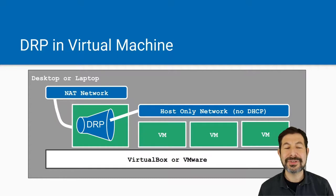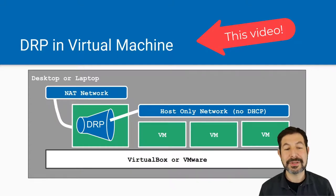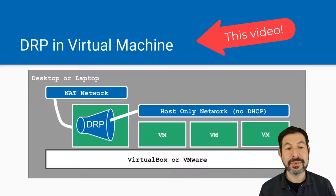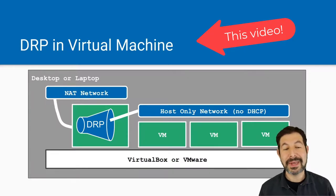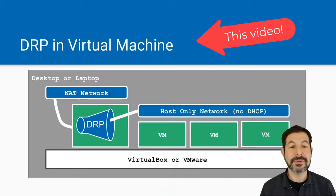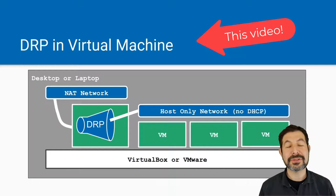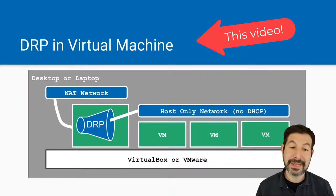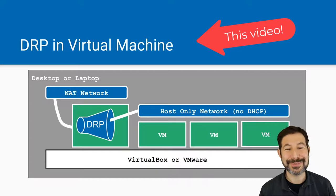The Digital Rebar in a virtual machine setup is very similar to that process, except instead of running it on your desktop, we have to set up a virtual machine first. Usually a CentOS machine is a good choice with four gigs of RAM. Then attach that to the NAT network so you can download Digital Rebar, and the host-only network so you can PXE boot VMs. This is a bridged situation that works very well.